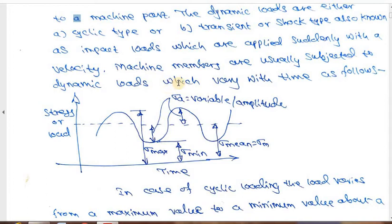Another example in mechanical members is the connecting rod of an IC engine. In one particular cycle of the engine, during the power stroke you have maximum load on the connecting rod, and during the suction stroke there is no load on the connecting rod. So the load varies from zero to maximum with respect to time. You will find many kinds of applications of this cyclic type of load in practice.